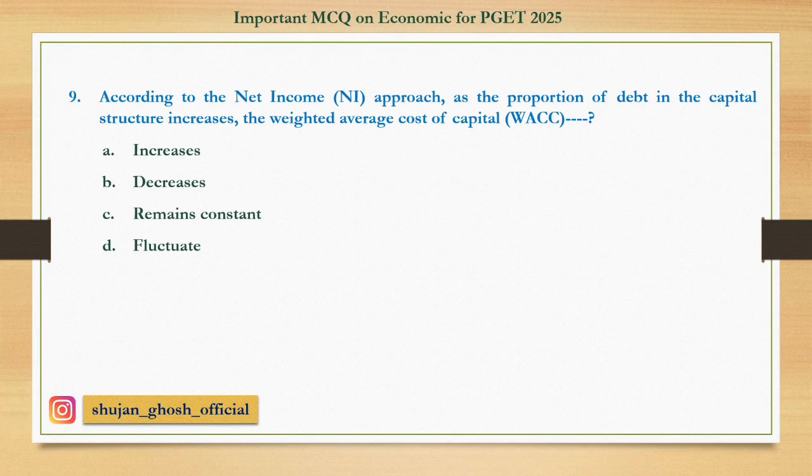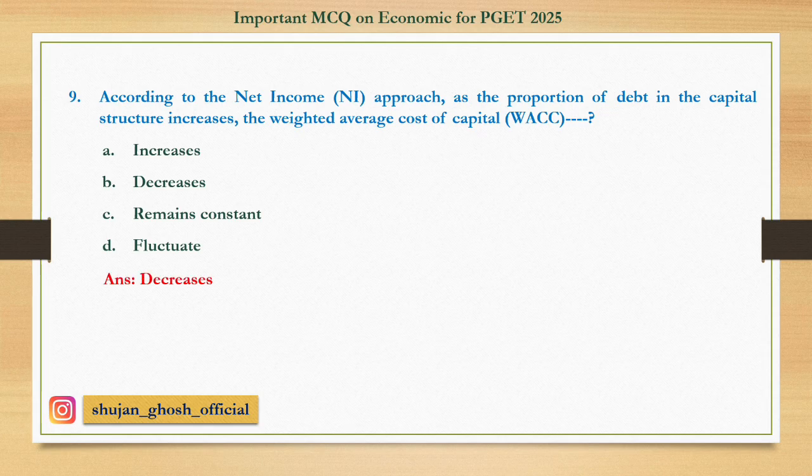Question number nine: According to the net income approach, as the proportion of debt in the capital structure increases, the weighted average cost of capital — option A: increases. B: decreases. C: remains constant. D: fluctuates. Answer: decreases.